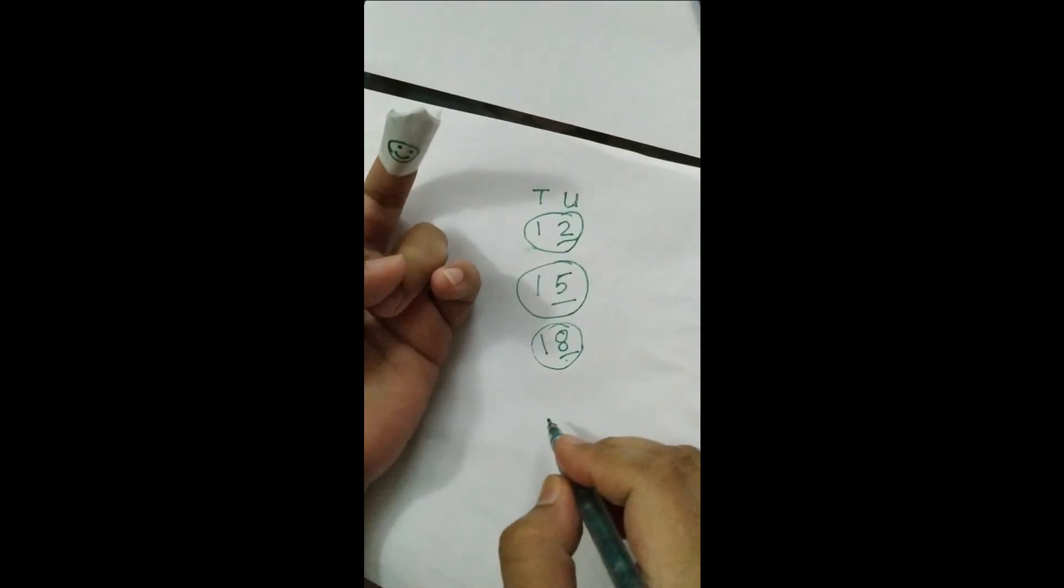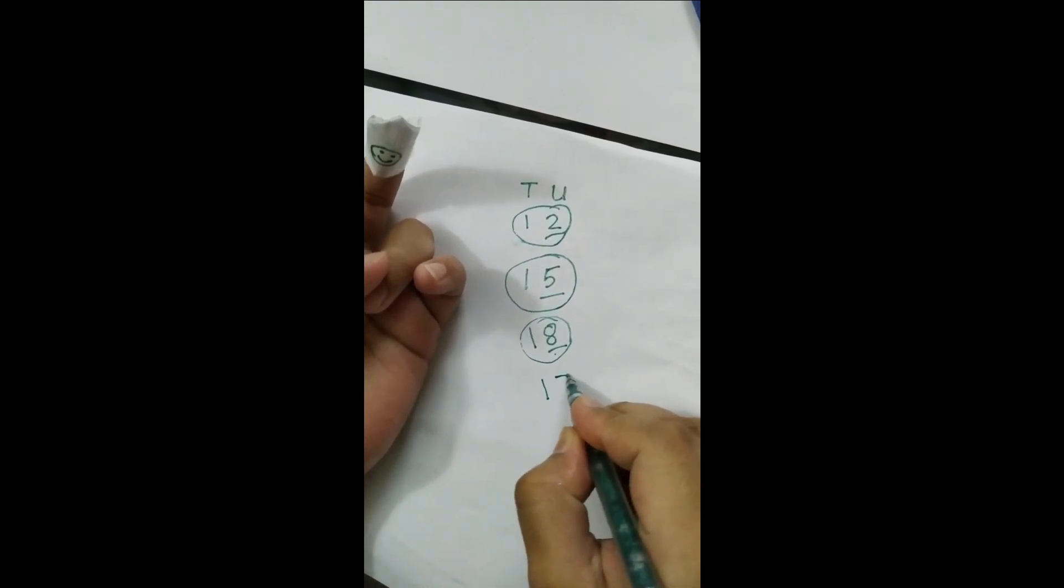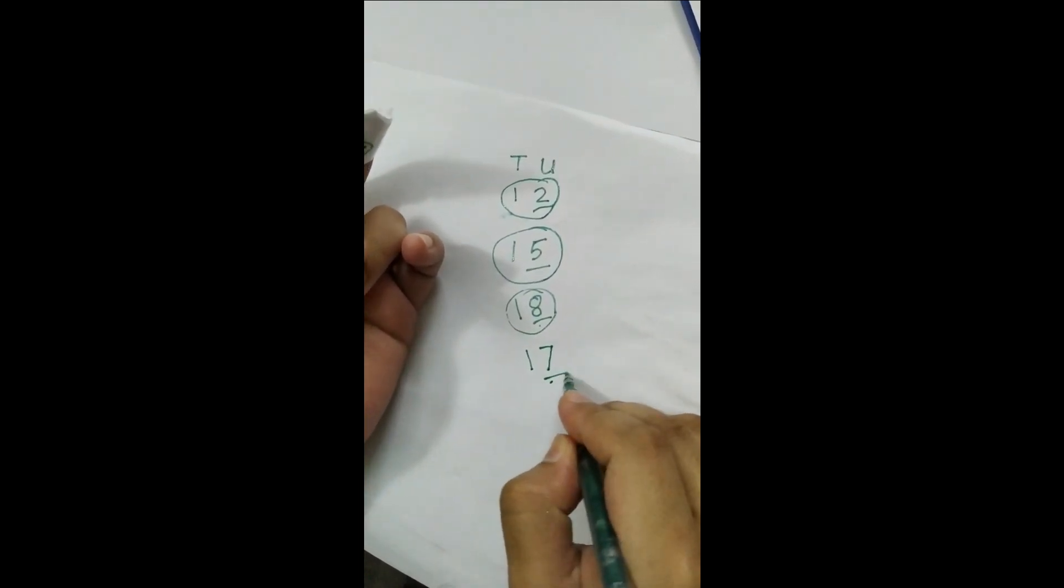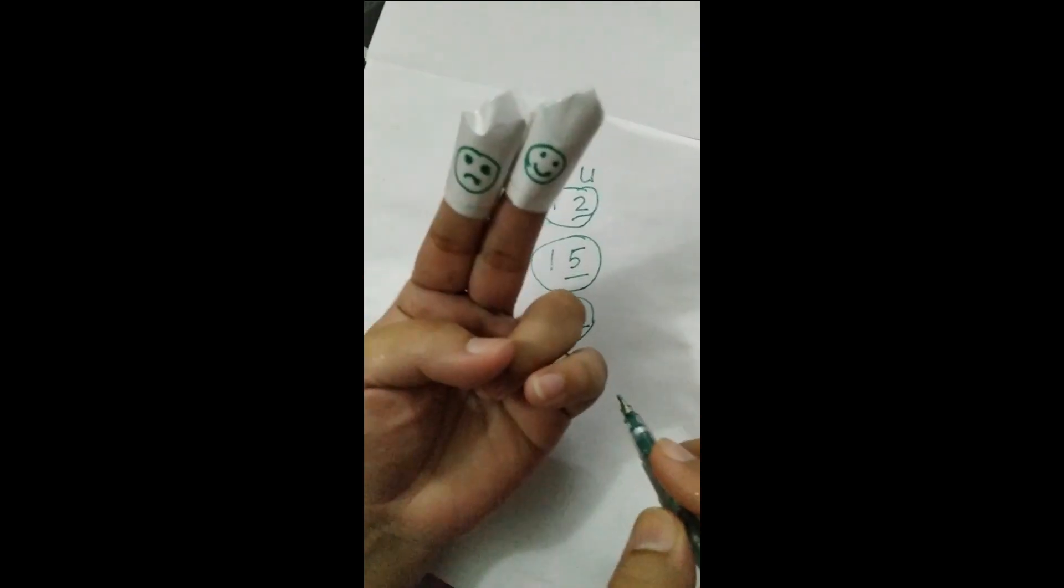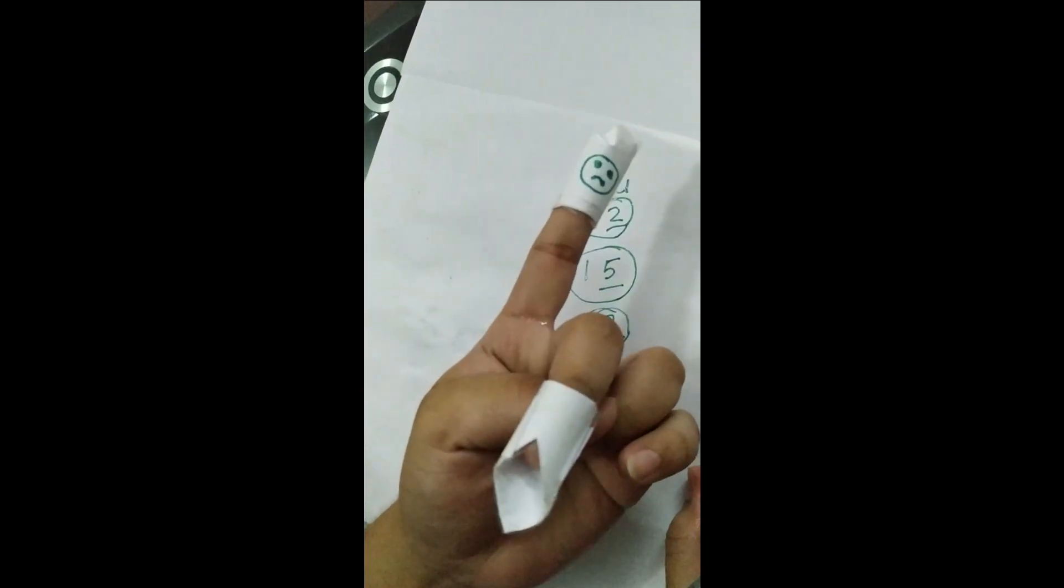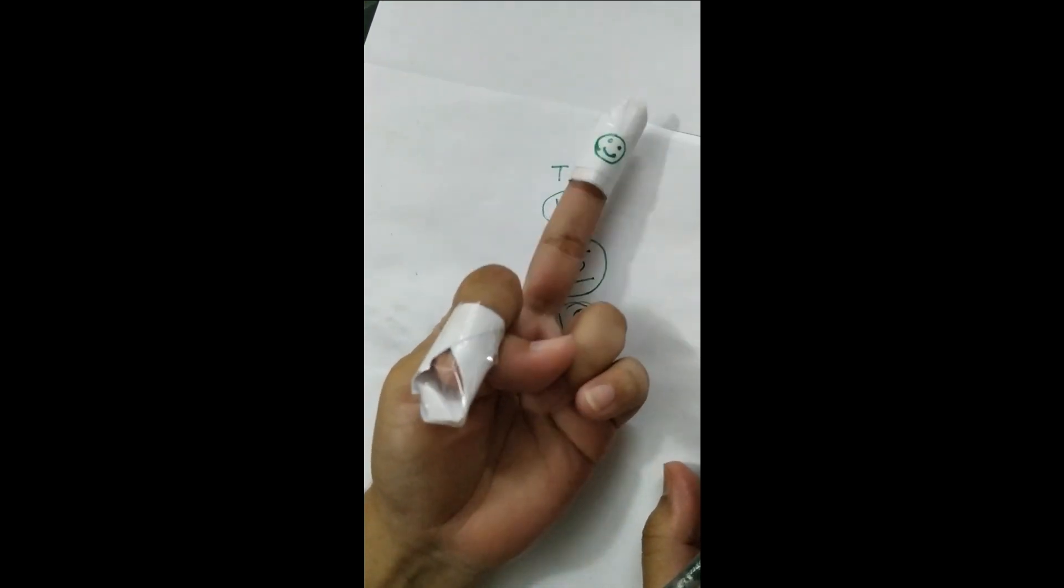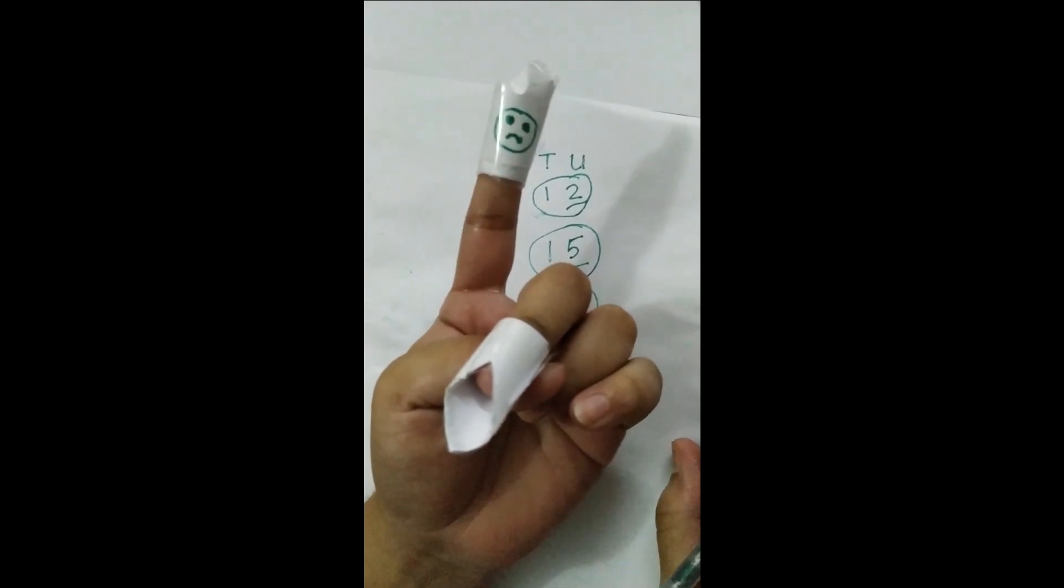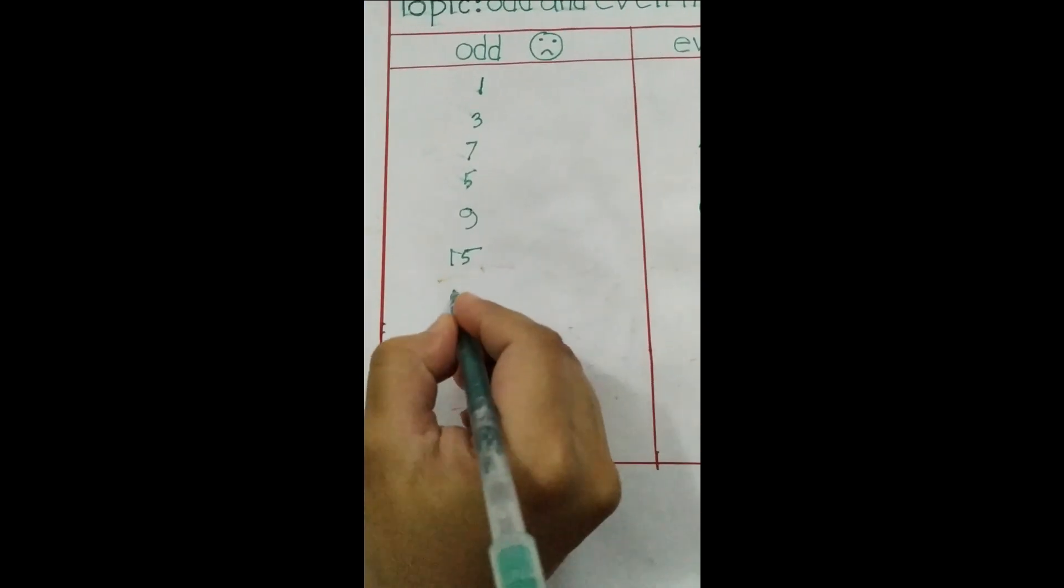Another thing, if I want to write here seventeen. We will observe the units first. Unit is seven, that means we will find out here: one, two, three, four, five, six, seven. Seven is sad, that means seven is odd. The whole thing will be odd. We will write here seventeen.